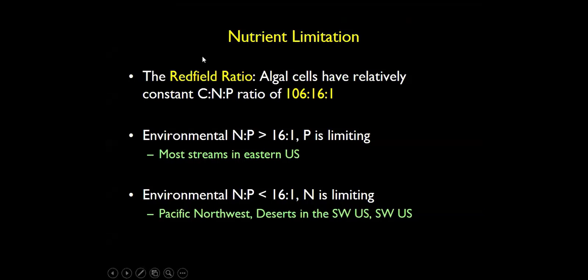To review: when we think of autochthonous production in this stream, we need to think about what these plant species need to build their plant tissue. Algae in general have a ratio of carbon to nitrogen to phosphorus of 106 to 16 to 1. So they have to find more nitrogen than phosphorus, and even more carbon — but they get that from carbon dioxide, which is rarely limiting. Nitrogen and phosphorus are what we call the macronutrients. Those are the ones you need the most of; it's primarily about nitrogen and phosphorus.